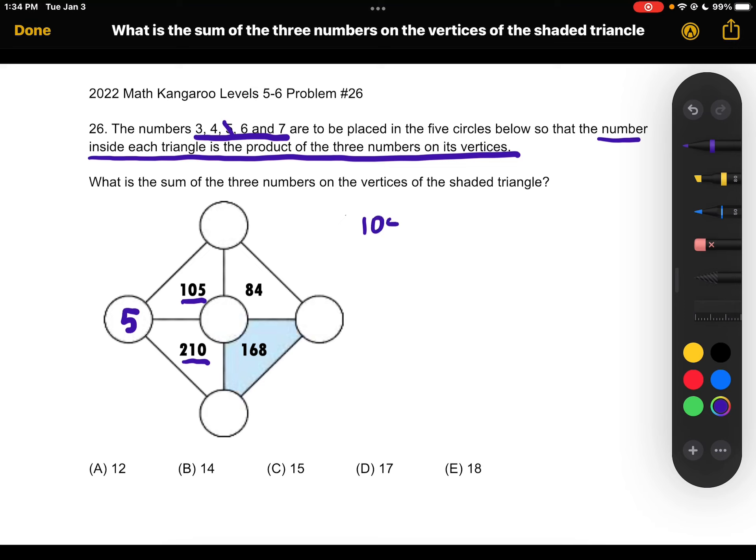we know that 105 must be equal to 5 times 21, and 5 times 21 is equal to 5 times 3 times 7, because 3 and 7 are both numbers that we have yet to place.